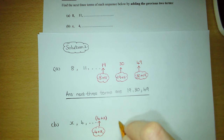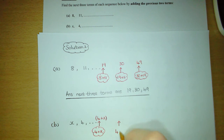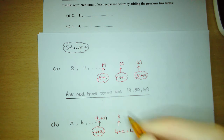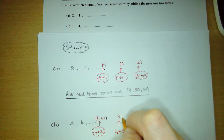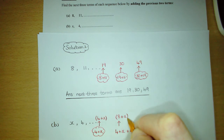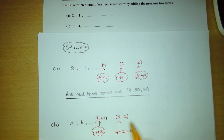To get the next term we again add the previous two terms, so we're adding (4 + x) and then another 4. Add the two number terms and we get 8, then don't forget about the plus x. Put brackets around it because we want to keep the 8 and the x together. So that is the next term: (8 + x).